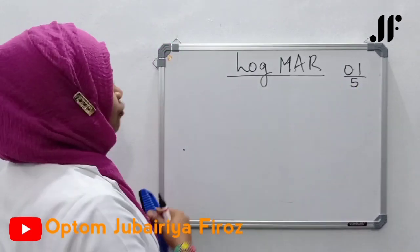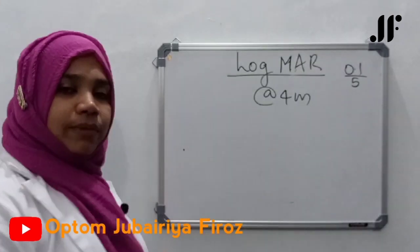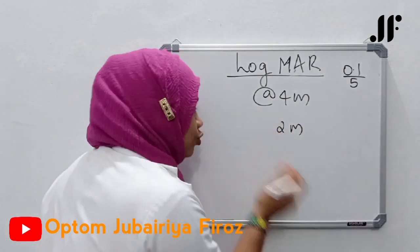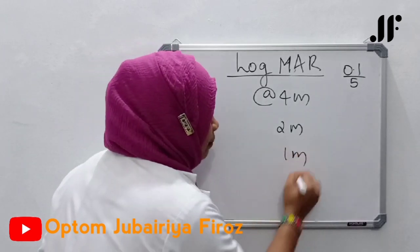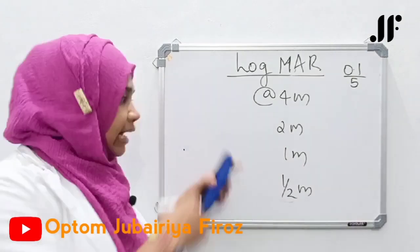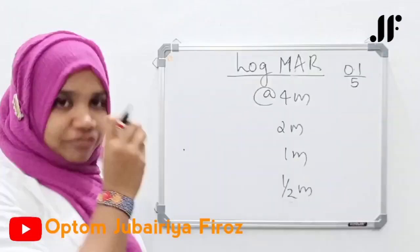So this is the simplest method. This LogMAR usually, standardly, it is done at 4 meters. For 4 meters, if you need LogMAR, you decrease it to 2 meters, 2 meters you decrease it to 1 meter, and then to half meter.